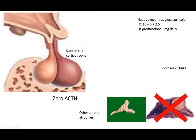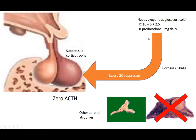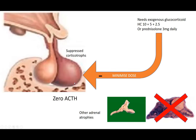Traditionally we've used hydrocortisone 10, 5, and 2.5, or prednisolone 3 milligrams once daily — they're pretty equivalent. But whichever one you use, if you give a bit too much, the suppression will persist and the ACTH will continue to be zero. So you have to minimize the dose. That is difficult in Cushing's patients because as you reduce the dose, the patient gets all kinds of aches and pains. And it takes a long time for the corticotrophs to recover — they've been suppressed for maybe three or four years.